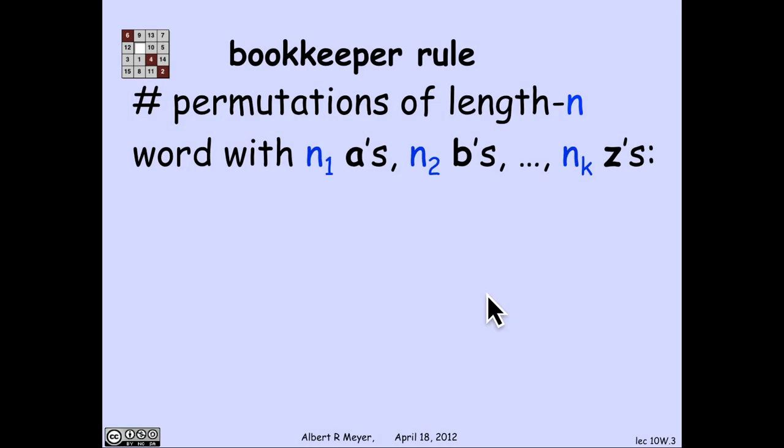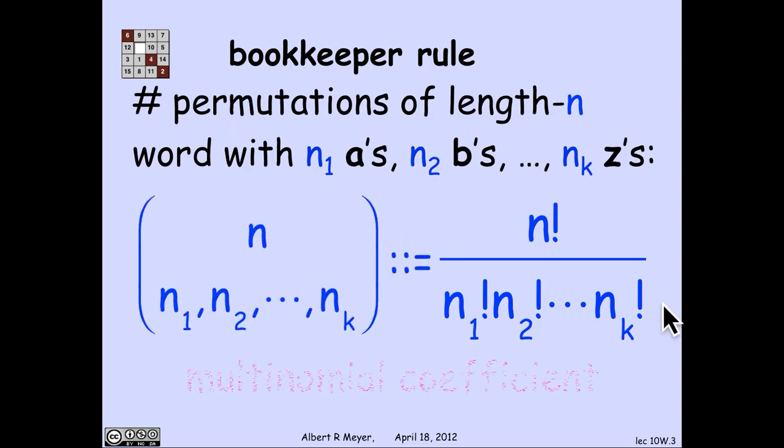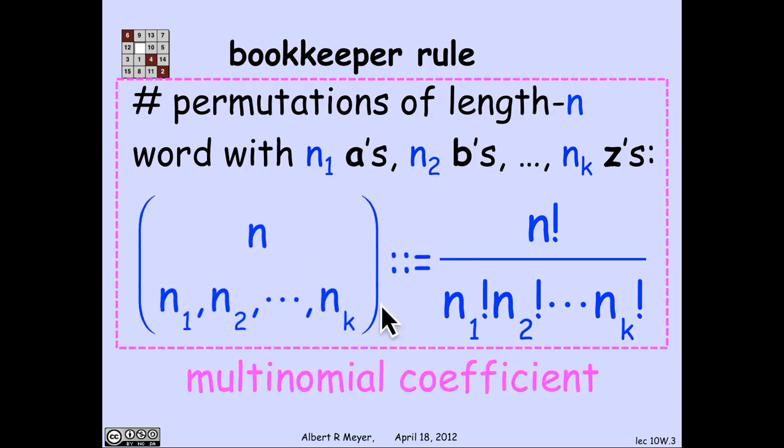More generally, by the same reasoning, if I look at a sequence of n letters of which n1 are a's and n2 are b's up through nk are z's, then the number of permutations of those letters with the repeated a's, b's, and z's is n factorial divided by n1 factorial times n2 factorial through nk factorial.